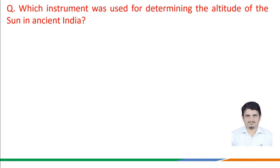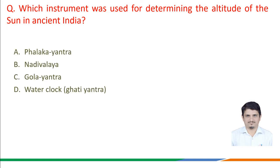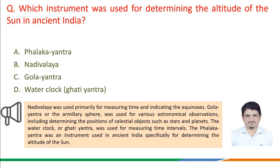The next question is: which instrument was used for determining the altitude of the sun in ancient India? Option a) Phalak Yantra, option b) Nadiwalaya, option c) Gola Yantra, option d) water clock i.e. Gati Yantra. Nadiwalaya was used primarily for measuring time and indicating the equinoxes.